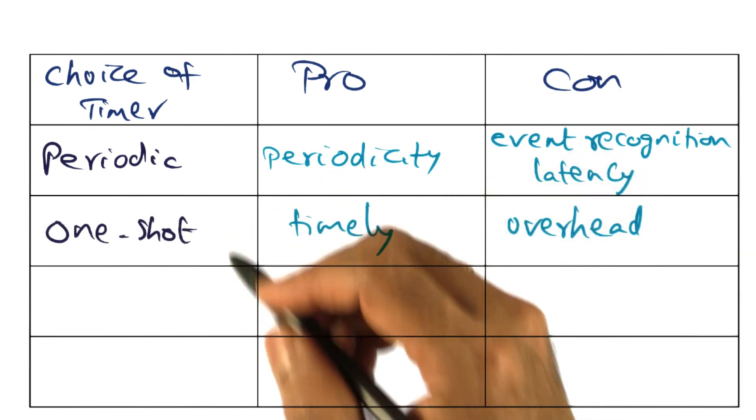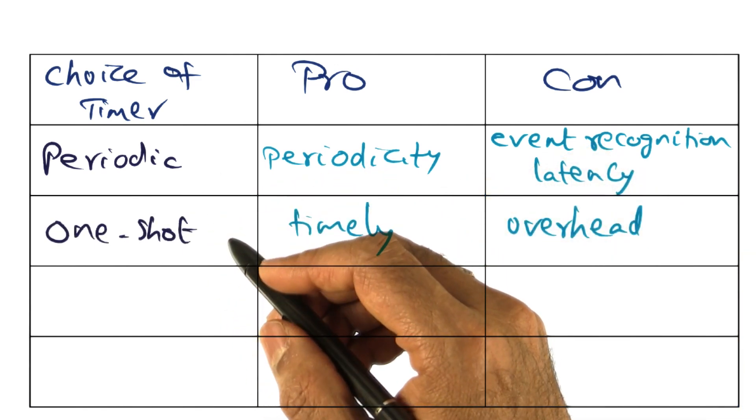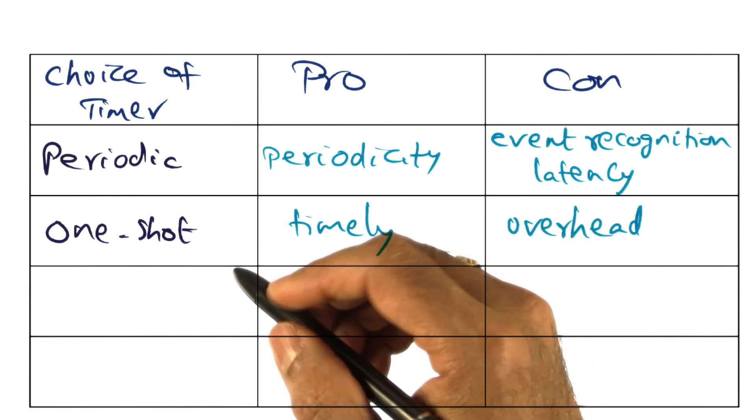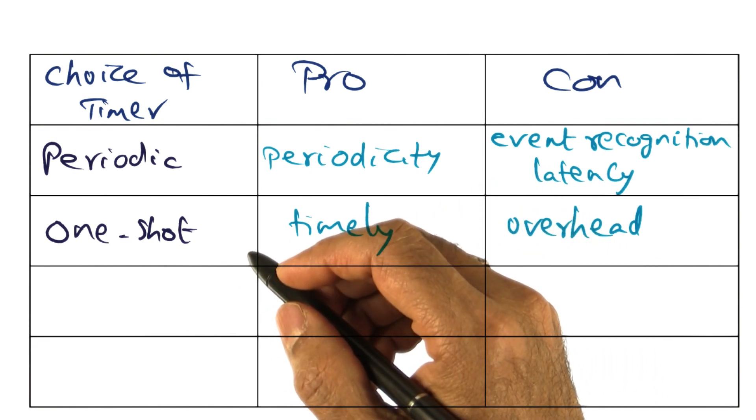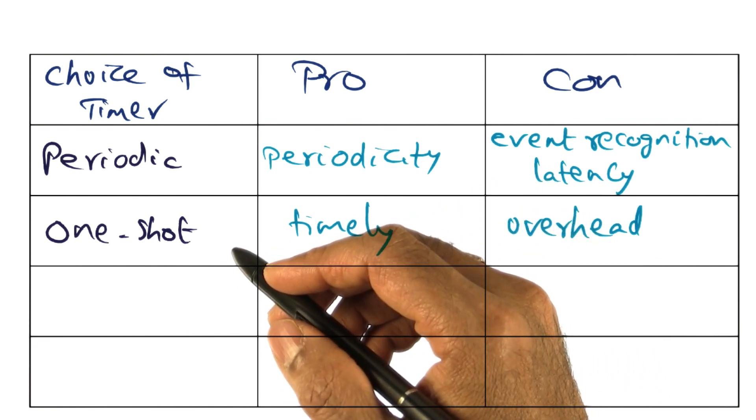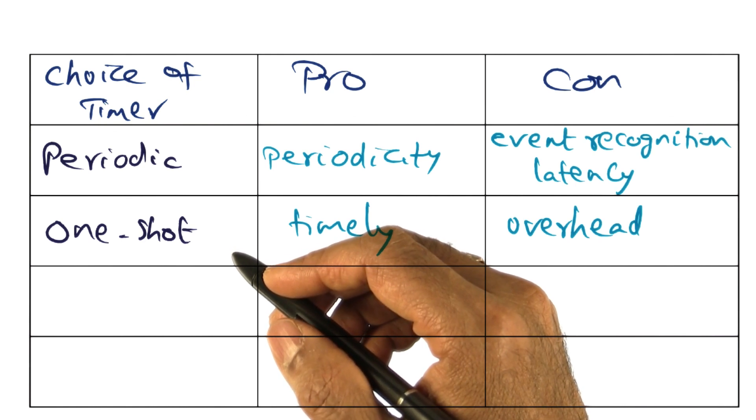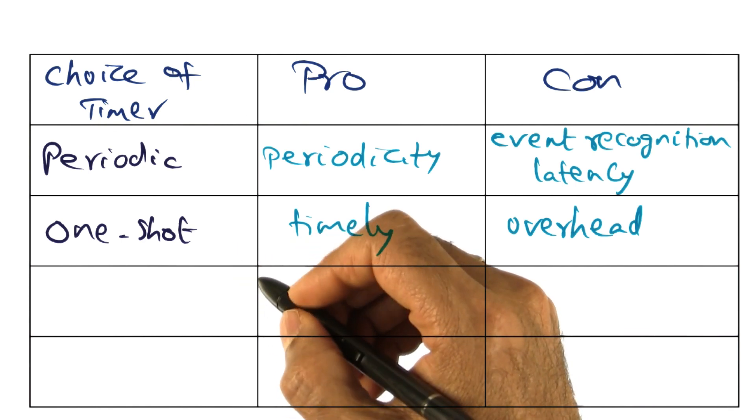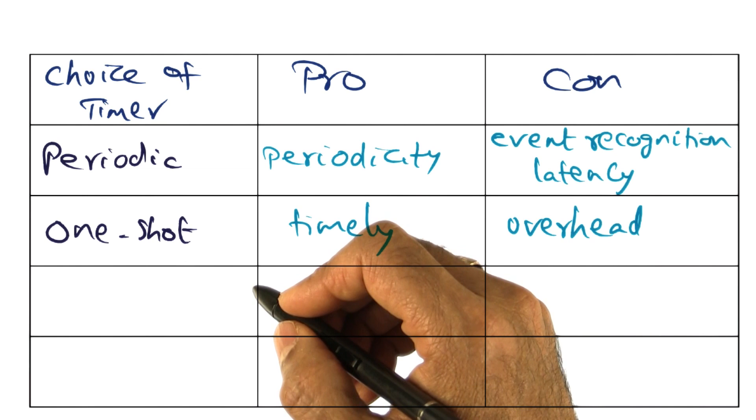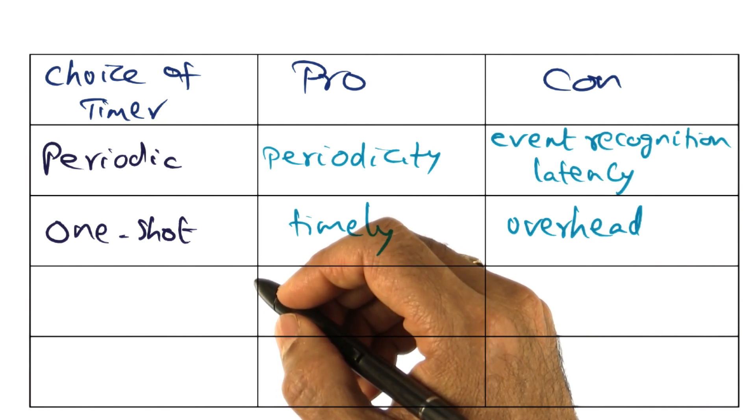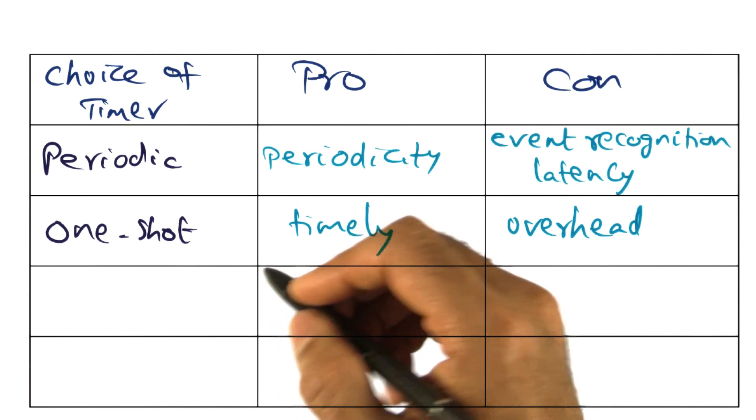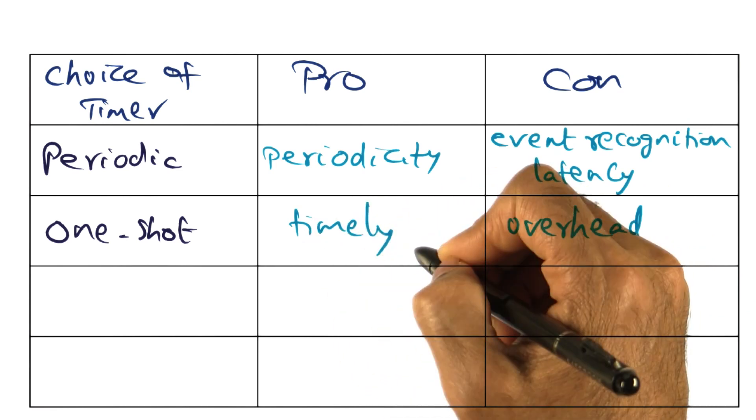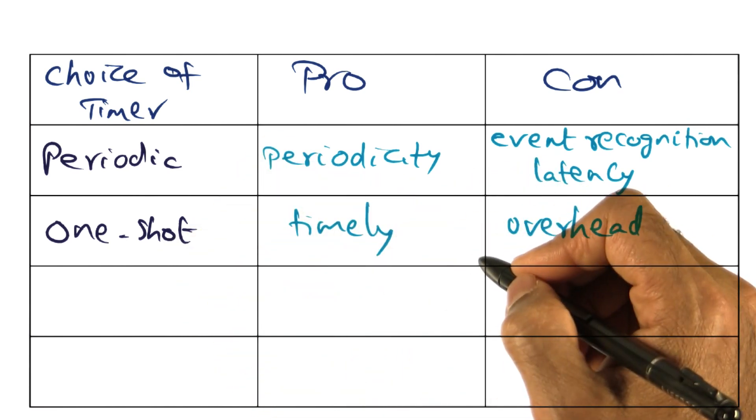The other extreme to periodic timer is what are called one shot timers. And what one shot timers are, they are exact timers. That is, you can program these timers to go off at exactly the point at which you want the interrupt to be delivered to the processor. So the pro is timeliness of the one shot timer.